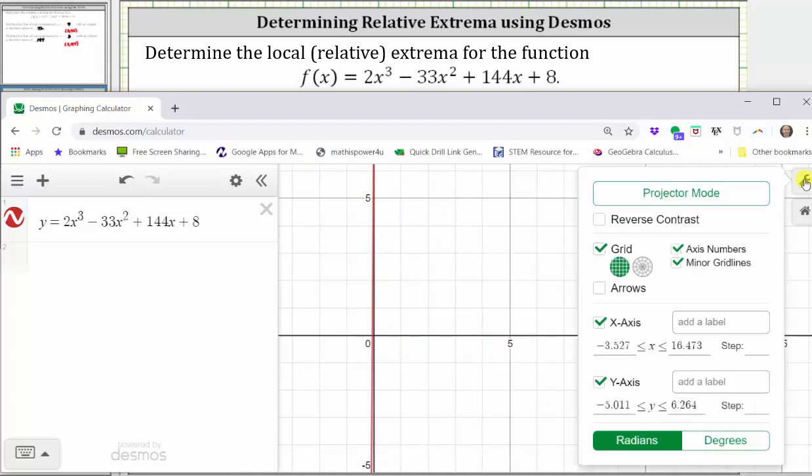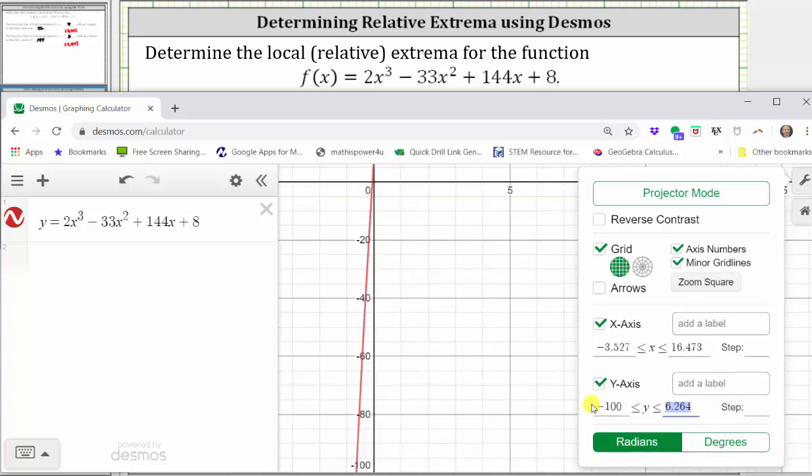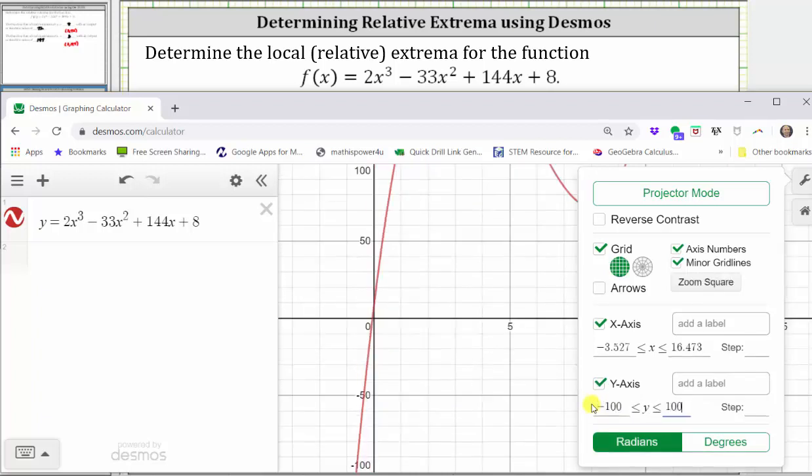What's nice about Desmos is that when we change the window, we will see the change instantly. So let's go down to the y-axis and change the y-interval from negative 100 to positive 100. Notice how the graph changes instantly.